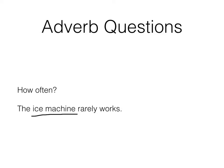How often? The ice machine works is our verb. Rarely is telling how often does it work. Because works is a verb and rarely is describing a verb, it's got to be an adverb.